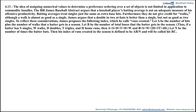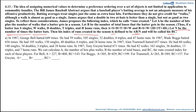Let A be the number of hits plus the number of walks that a batter gets in the season, and let B be the number of total bases that a batter gets in the season. So if a batter has S singles, W walks, D doubles, T triples, and H home runs, then A equals S plus D plus T plus H plus W, and B equals S plus W plus 2D plus 3T plus 4H. Let N be the number of times the batter bats. Then his index of Runs Created is defined by AB divided by N, called his RC.